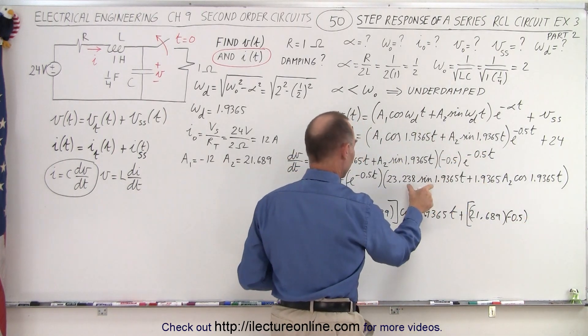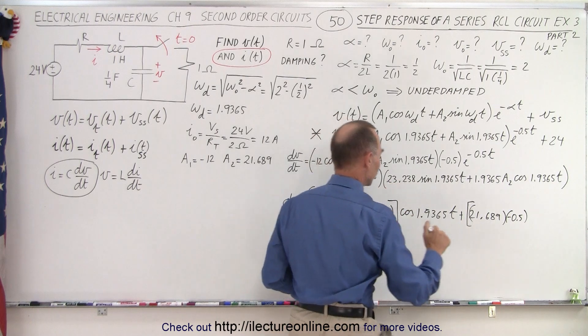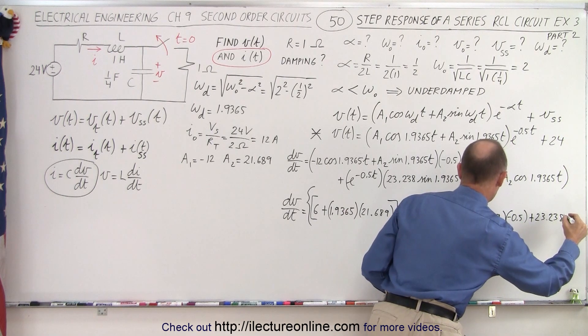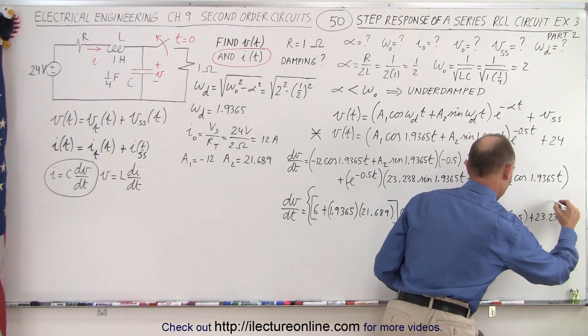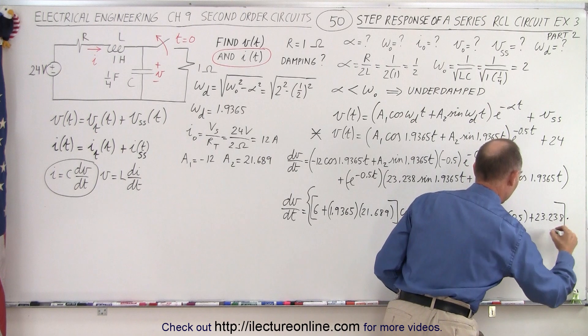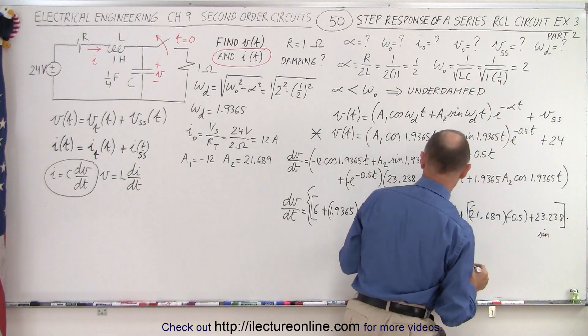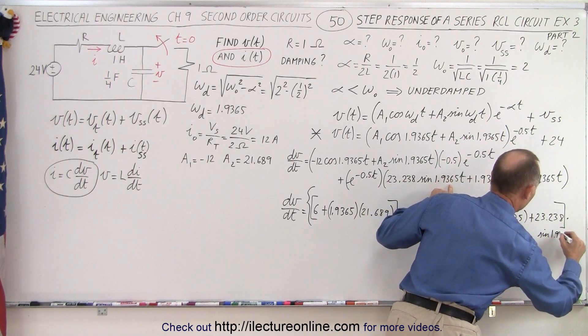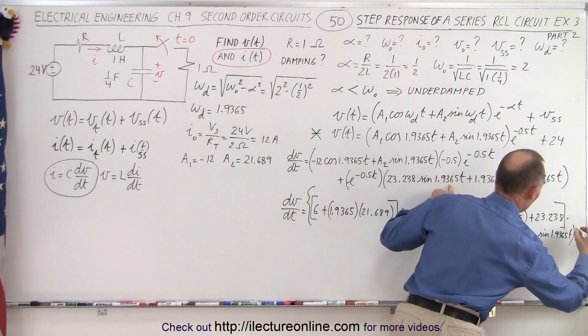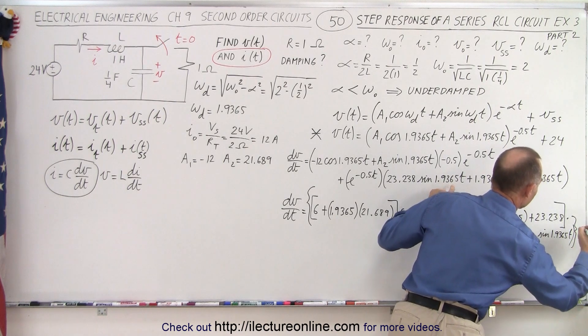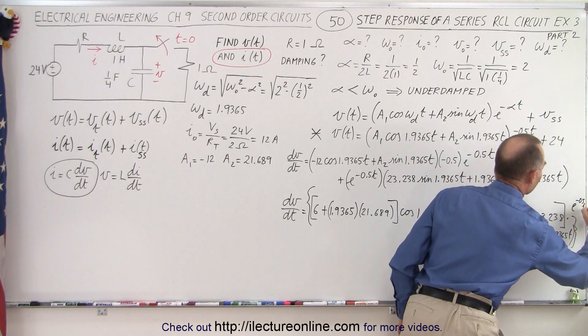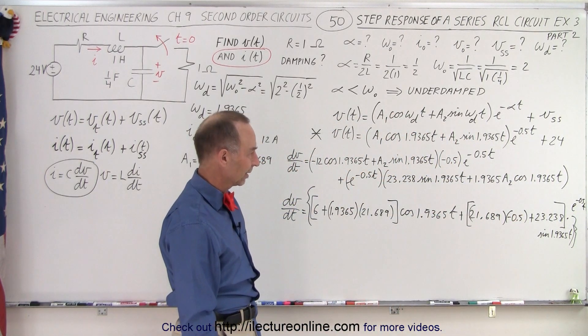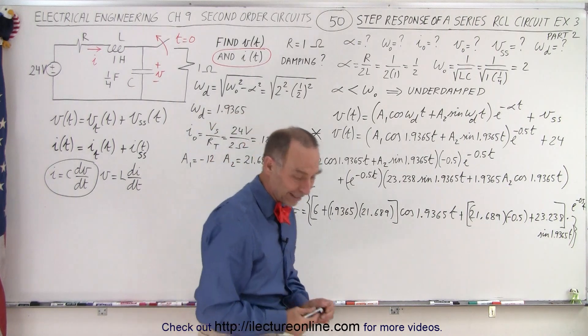That's on this portion of the equation. At the bottom here we have plus 23.238, and that would be times the sine, close the bracket here, so times the sine of 1.9365t, and then multiply the whole thing by e to the minus 0.5t. That's that portion right here. It does look terrible, doesn't it? Let me clean that up a little bit.